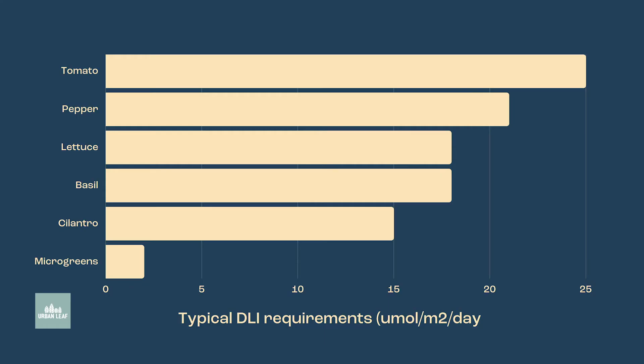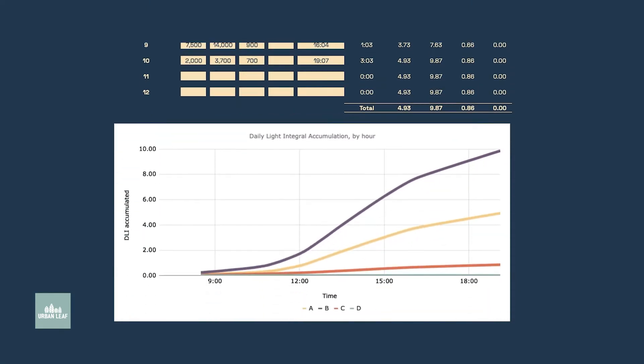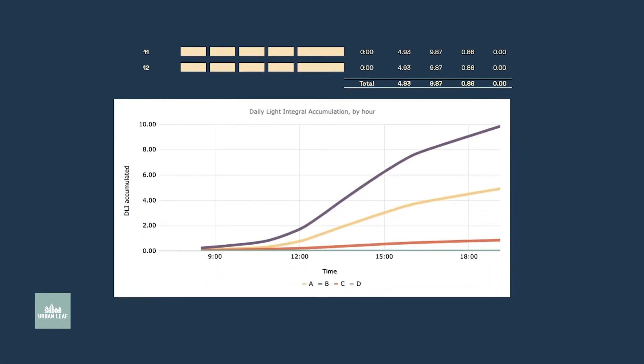At point B, right up near the window, this seems to be the sunniest place in the whole apartment. Because this window faces west, you'll notice the DLI really didn't start increasing that much until around lunchtime. This is probably where I'd want to put my high-light-requiring plants such as tomatoes or peppers — they'd be great candidates for the windowsill here.